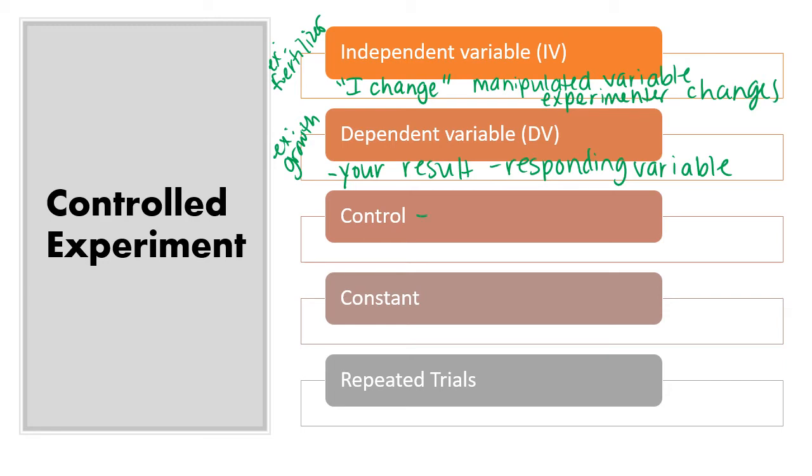Okay, your control. That's going to be your comparison group. So in an experiment, if you can, you always want to have a control. Comparison group, no treatment is applied. So this would be having the plant, your example, plant with no fertilizer.